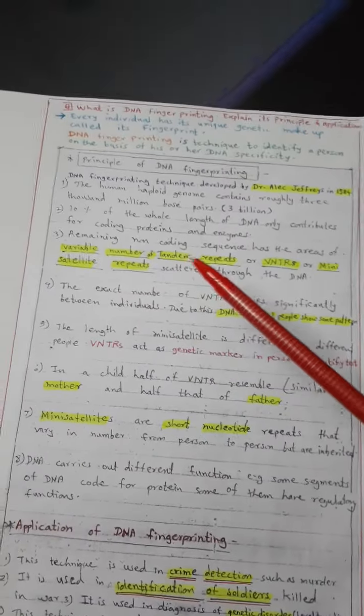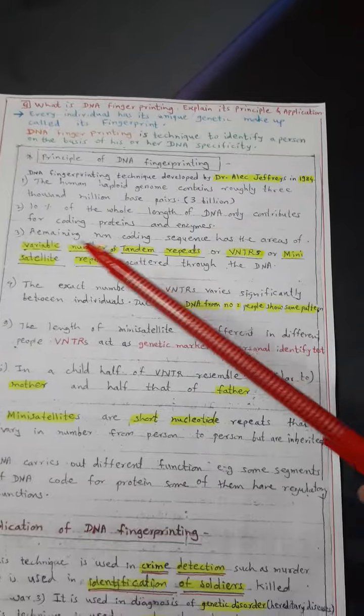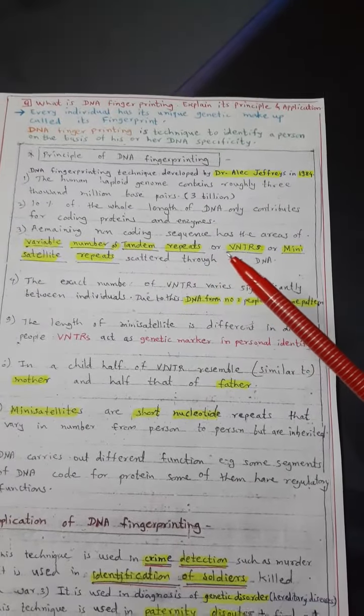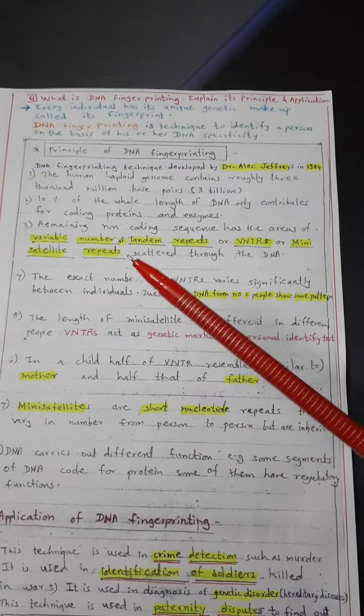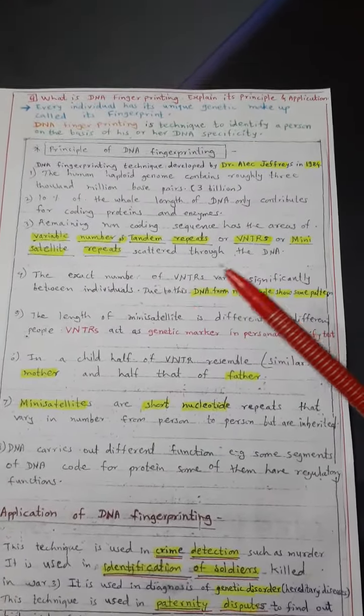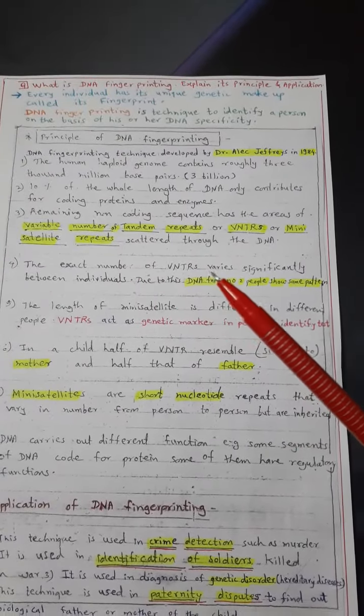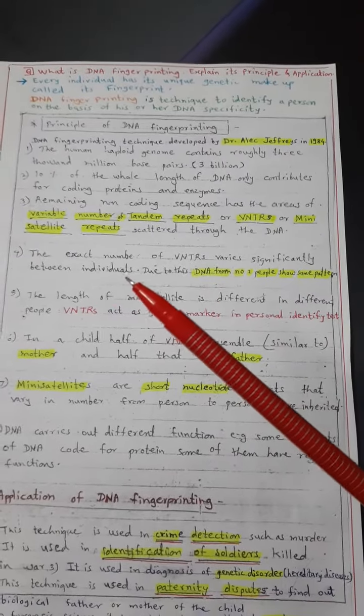The remaining non-coding sequence has the area of variable number of tandem repeats or VNTRs or mini satellite repeats scattered through the DNA. The exact number of VNTRs varies significantly between individuals.